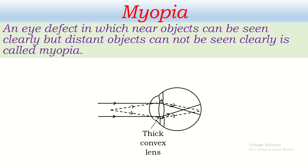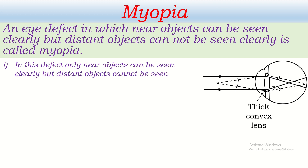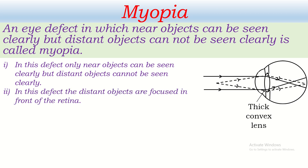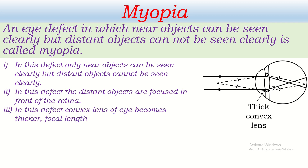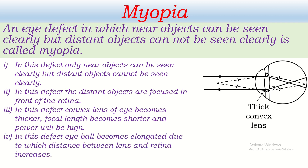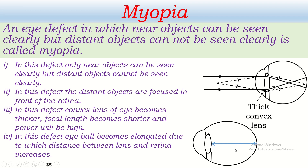What are the characteristics of myopia? Number one, only near objects can be seen clearly but distant objects cannot. Number two, distant objects are focused in front of the retina. Number three, the convex lens of the eye becomes thicker, focal length becomes shorter, and power is high. Number four, the eyeball becomes elongated, due to which the distance between lens and retina increases. In a myopic eyeball, the distance between lens and retina is shown to be increased, and because of this reason we have myopia.